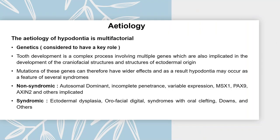The etiology of hypodontia is multifactorial; however, genetics are considered to have a key role. Tooth development is a complex process involving multiple genes also implicated in the development of craniofacial structures and structures of ectodermal origin. Mutations of these genes can have wider effects, and hypodontia may occur as a feature of several syndromes. We can have non-syndromic hypodontia or hypodontia associated with syndromes like ectodermal dysplasia, oro-facial-digital syndromes, Down syndrome, and others.